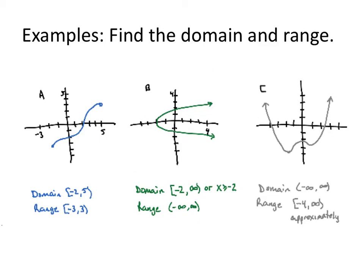The graph in green, the graph labeled b. Domain, x values, negative 2 is the first one, and it keeps going forever, so to infinity. You could use inequality notation, x is greater than or equal to negative 2 instead.